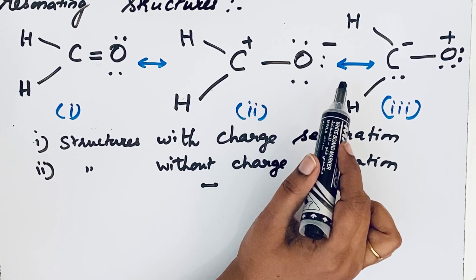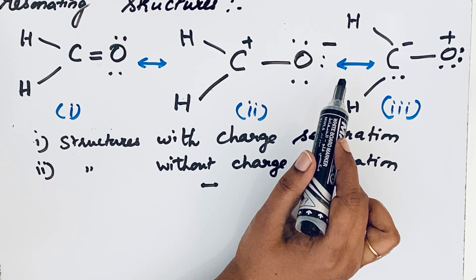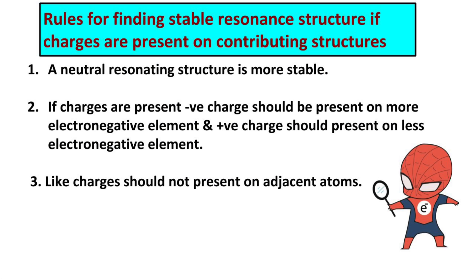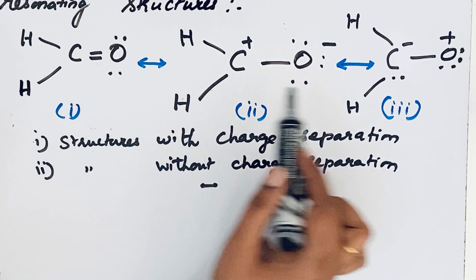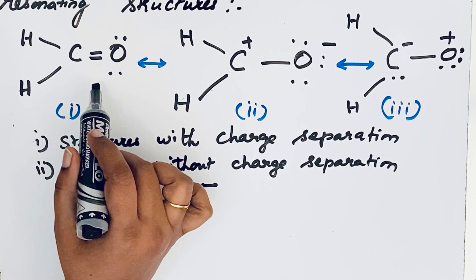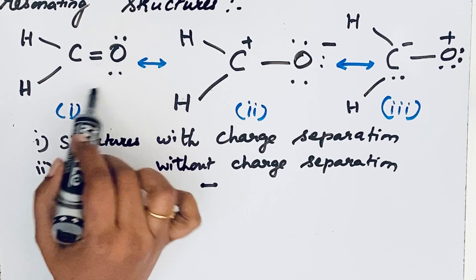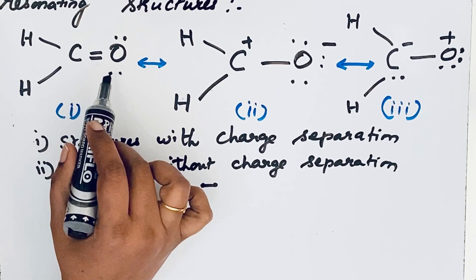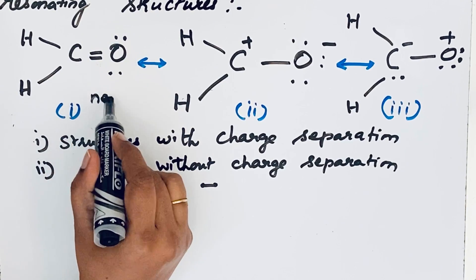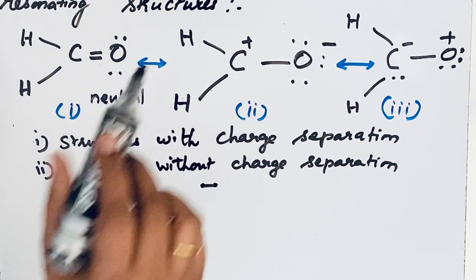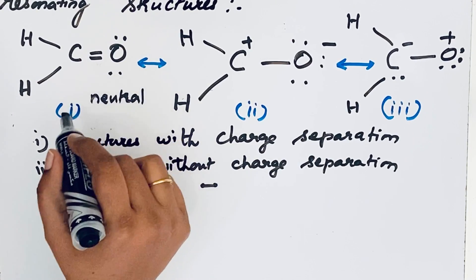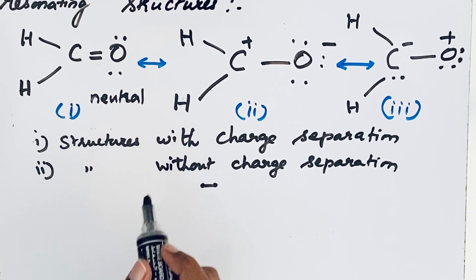If charge separation is not present, you need to find the formal charge. Whenever charge separation is present in the question, always note that the structure without charge separation is highly stable. Among these three structures, only the first structure has no charge — it is a neutral compound. A neutral compound is highly stable, so structure one is highly stable.